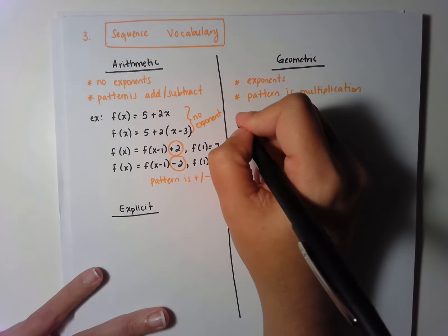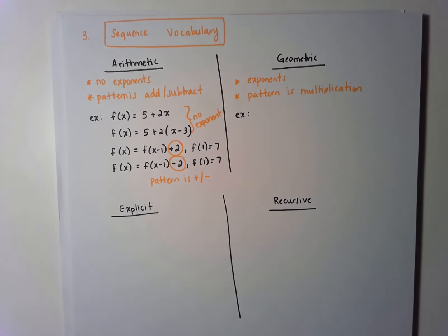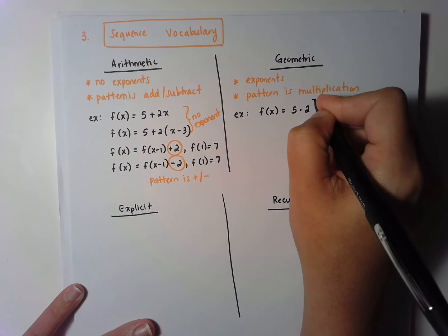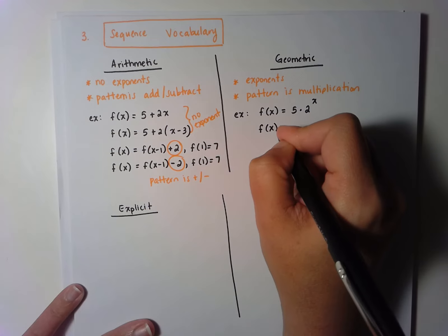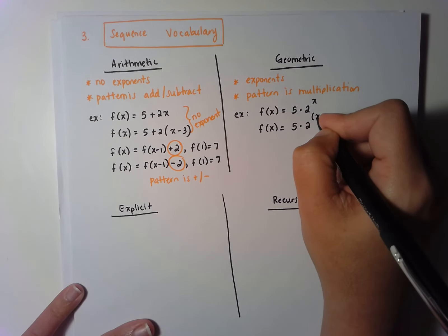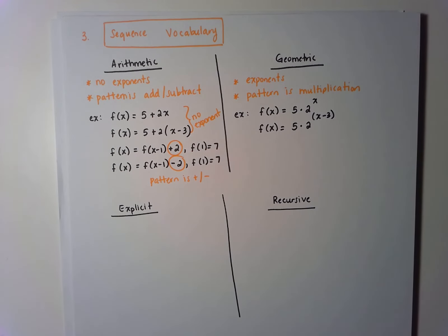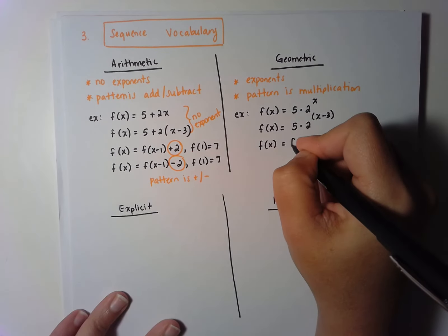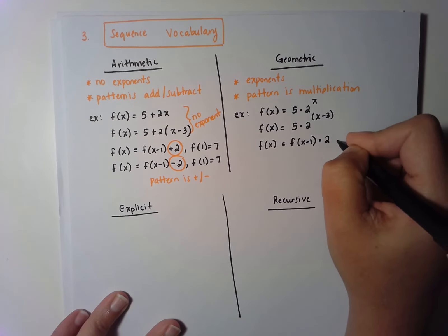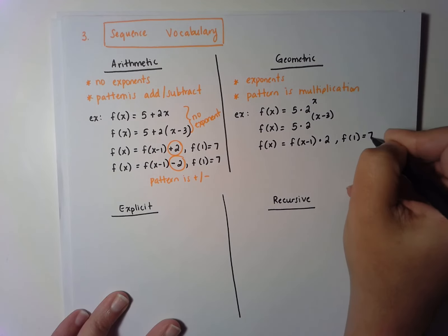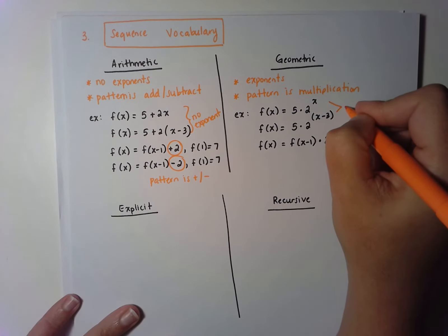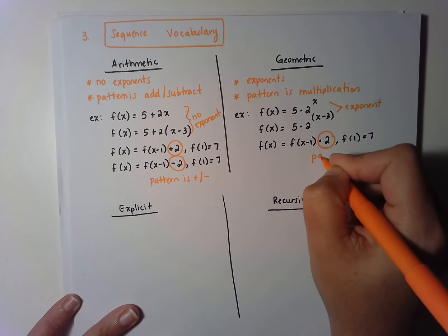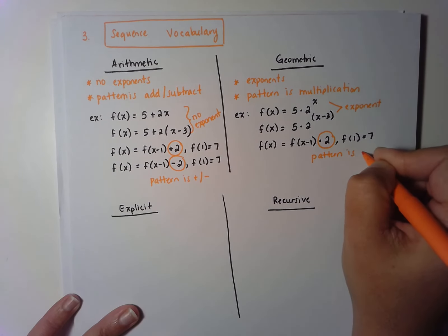For geometric examples: a good explicit example would be f of x equals 5 times 2 to the x power, or f of x equals 5 times 2 to the x minus 3 power if your sequence doesn't start at 0. A recursive example would be f of x equals f of x minus 1 times 2, with starting value f of 1 equals 7. The explicit equations have exponents, and the recursive equation has multiplication — that's what makes these geometric sequences.